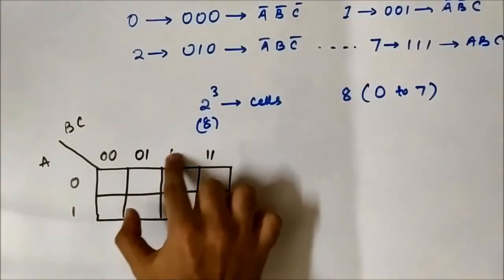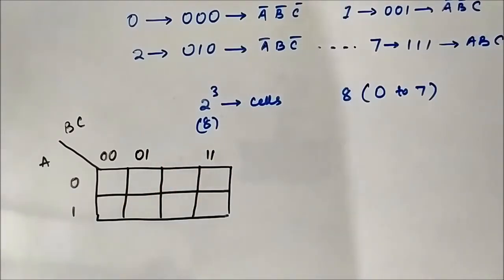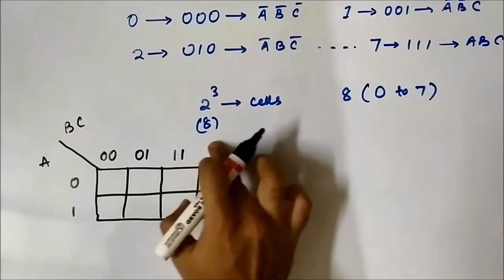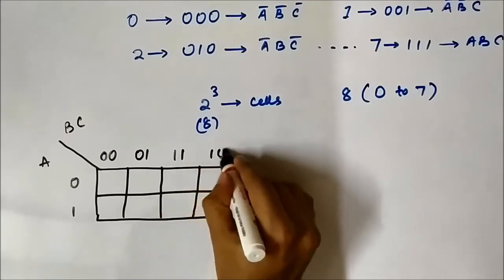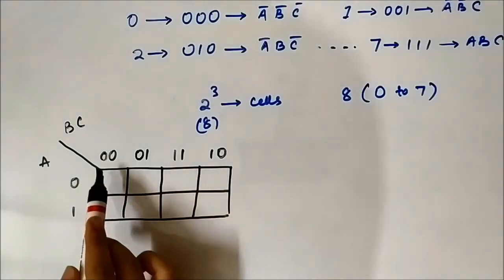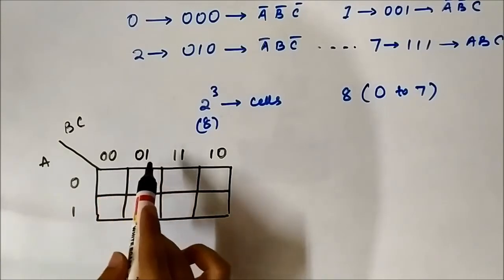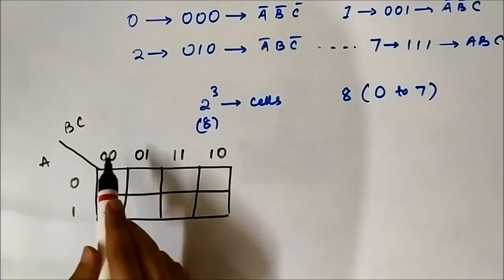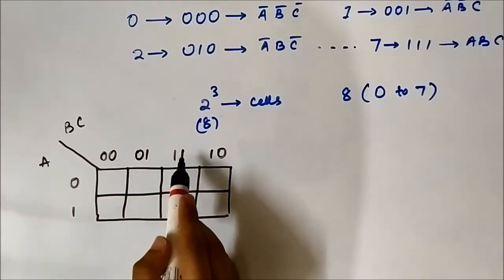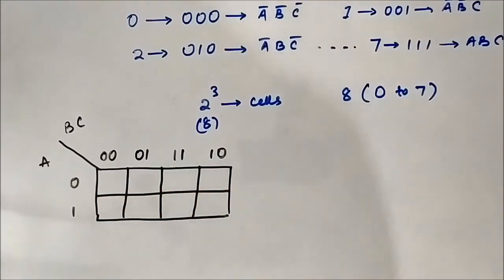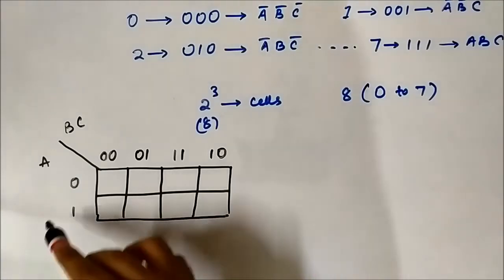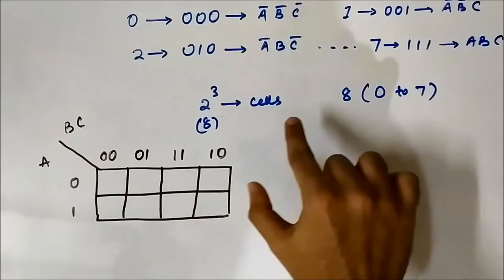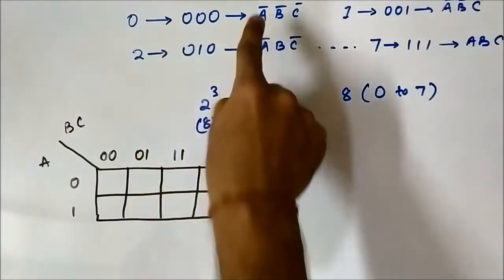You might think the sequence goes serially: 0,0 — 0,1 — 1,0 — 1,1. But no, it is not like that. It will be 0,0 — 0,1 — 1,1 — 1,0. Each of these cells represents a particular Boolean term.